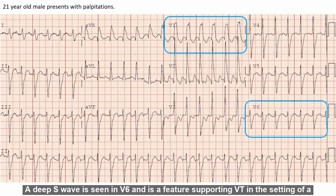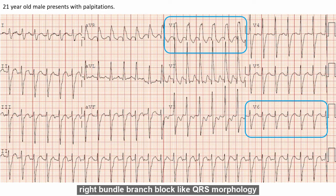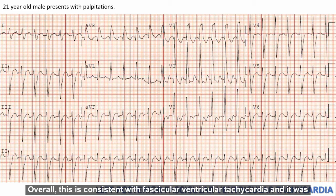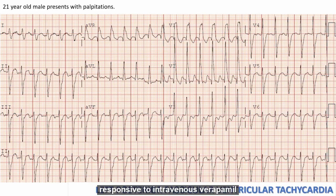A deep S wave is seen in V6 and is a feature supporting VT in the setting of a right bundle branch block-like QRS morphology. Overall, this is consistent with fascicular ventricular tachycardia and it was responsive to intravenous verapamil.